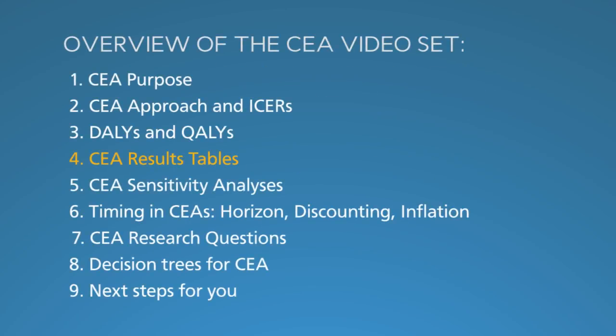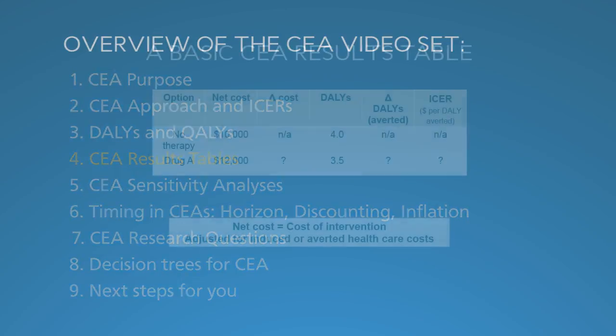In segments 1 and 2, you learned why to do CEAs and how to compare net costs to health outcomes. In segment 3, you learned about DALYs and QALYs, the uber health metrics. In this segment, number 4, on CEA results tables, we examine CEA findings and how to present them.